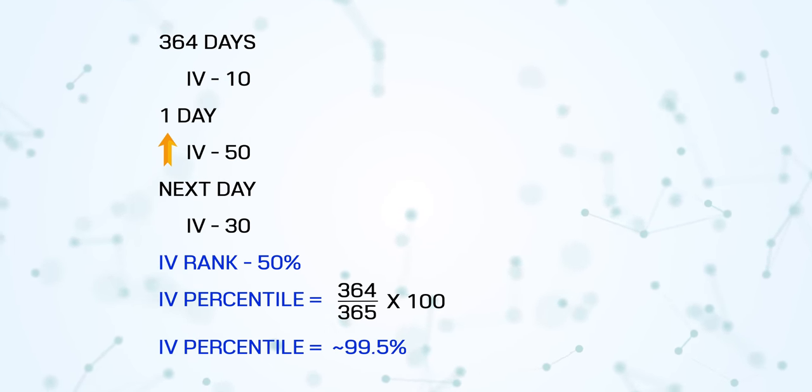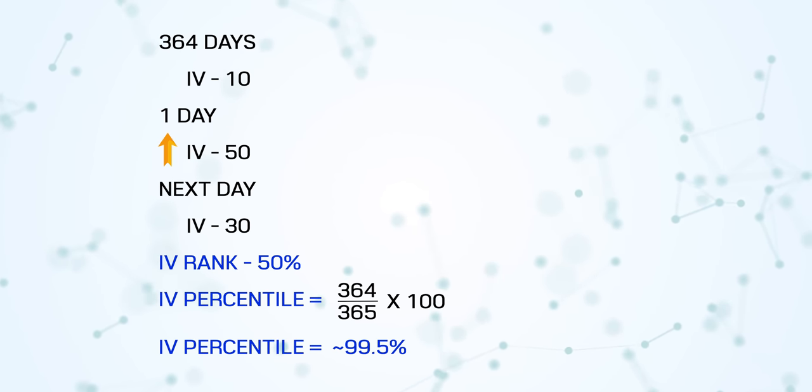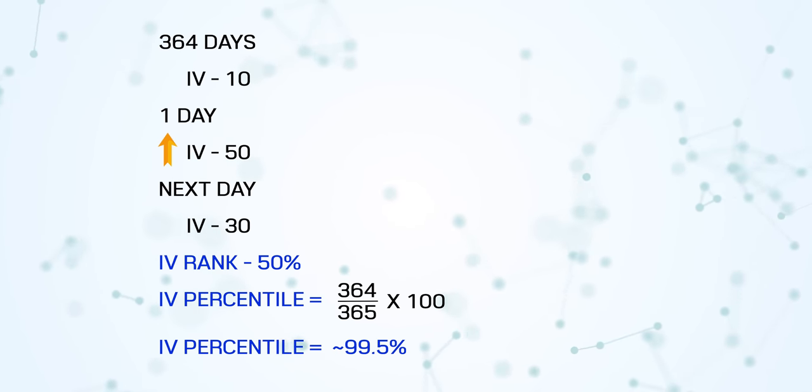Therefore, people use another measure called IV Percentile. IV Percentile tells you what percentage of days the IV was lower in the last one year compared to today's IV. Using the same example — out of 365 days, 364 days the IV was 10, one day it was 50, and now it is 30 — IV Rank may be 50%, but IV Percentile would be 99.5%, because 99.5% of days the IV was lower than today. So IV Percentile may be a better way of looking at things.